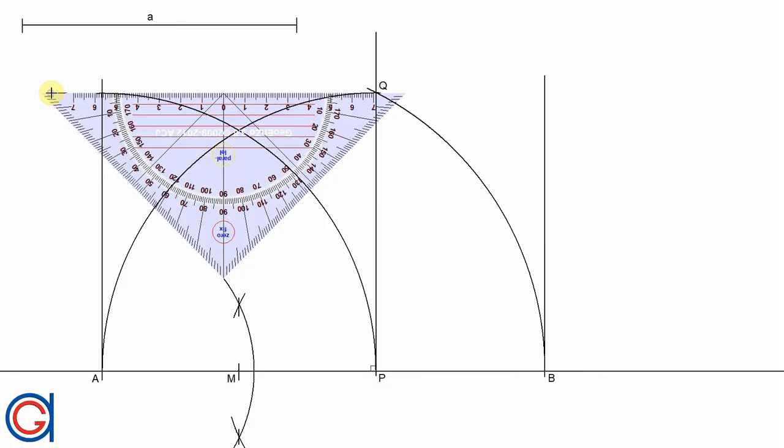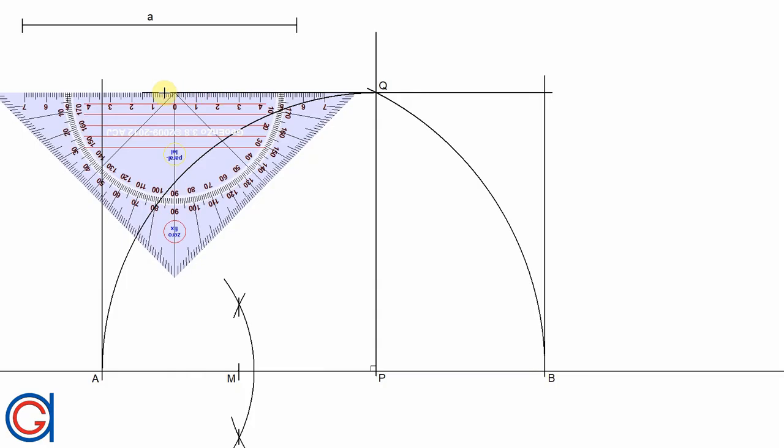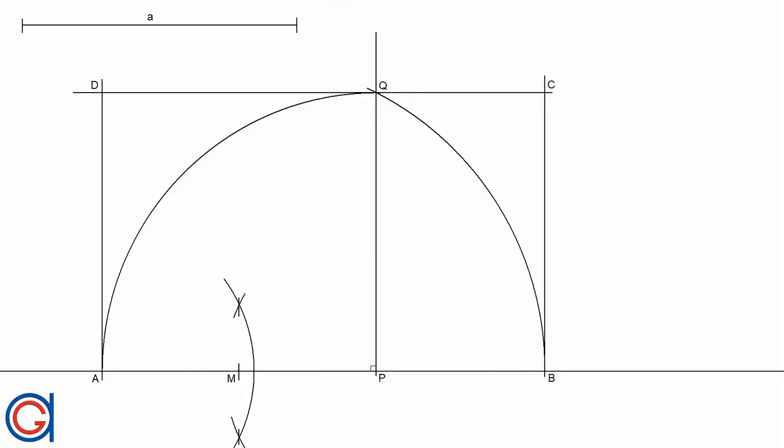Where this parallel horizontal line cuts our previously drawn vertical line, we are going to obtain two new points C and D, which are the last two vertices of the golden rectangle we are trying to draw.